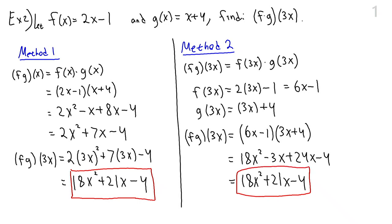These are just two different ways of doing the same problem. In method 1, I figured out the general form for the new function and then plugged in what I needed. In method 2, I evaluated the individual functions at the specific point or variable first and then performed the operation on them to get the answer.